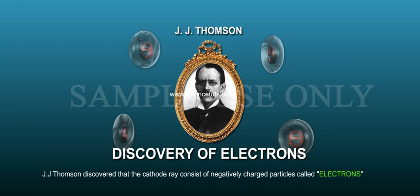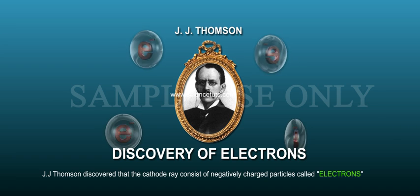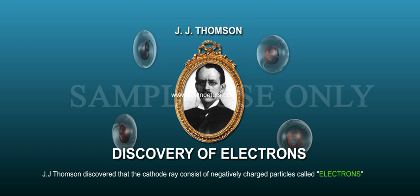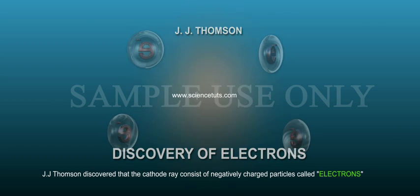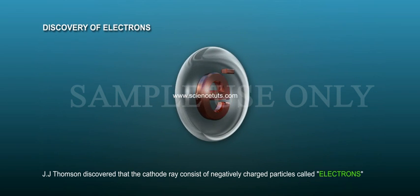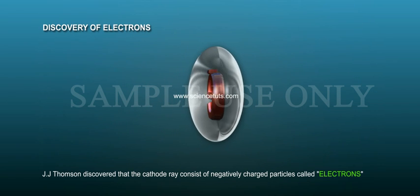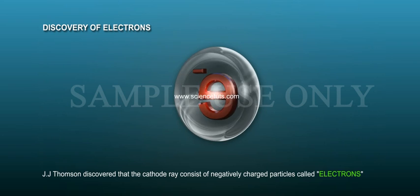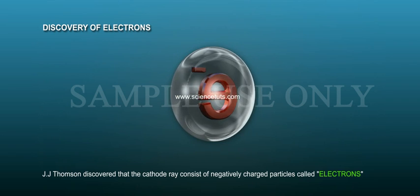J.J. Thomson discovered that the cathode ray consists of negatively charged particles called electrons.